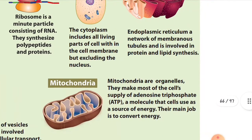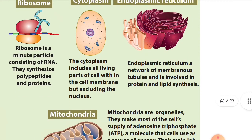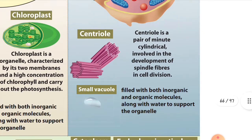Mitochondria are organelles that supply most cells with ATP — adenosine triphosphate — a molecule that cells use as a source of energy. The main job of mitochondria is to convert energy. The cytoplasm includes all living parts of the cell within the cell membrane, but excluding the nucleus. The endoplasmic reticulum is a network of membranous tubules involved in the synthesis of proteins and lipids.